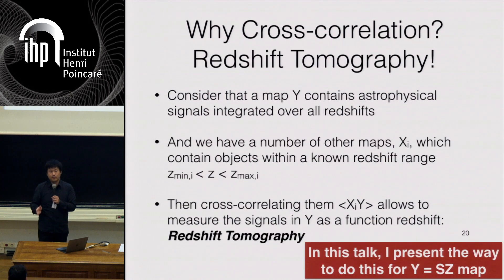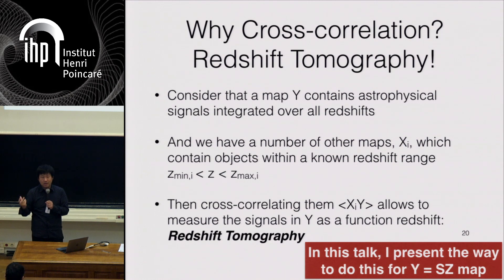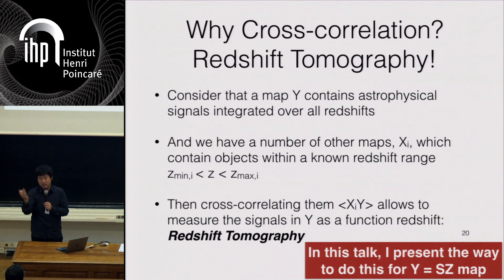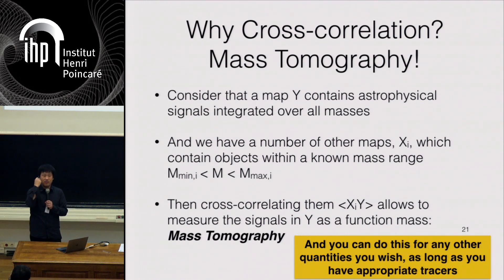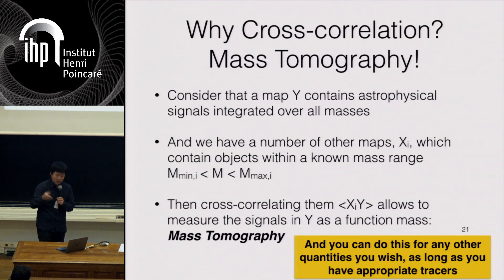The real power is tomography. When you have a signal map Y that contains the signal integrated over all redshifts, but then you have spectroscopic galaxy samples from SDSS within a certain redshift range, you cross-correlate and you get signal out within that range — that's tomography. You can also do mass tomography: when you cross-correlate your map with samples of known characteristics — known mass ranges, known star-formation rates — cross-correlation gives you tomography on pretty much anything you want.